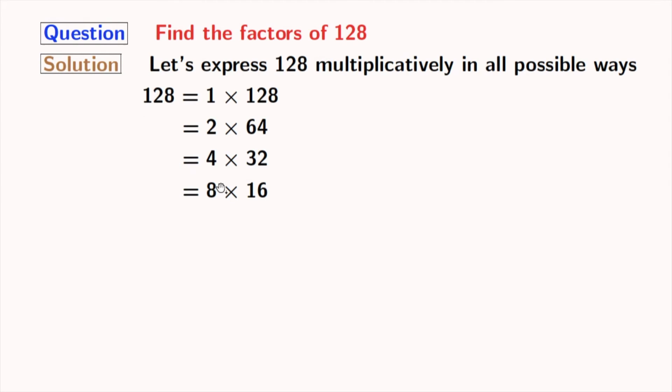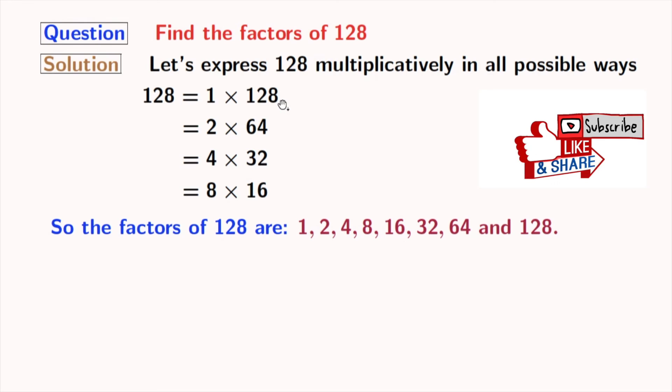Between 8 and 16, there are no numbers which can divide this number. So, we will stop right now. So, we have the factors of 128 which are 1, 2, 4, 8, 16, 32, 64 and 128.